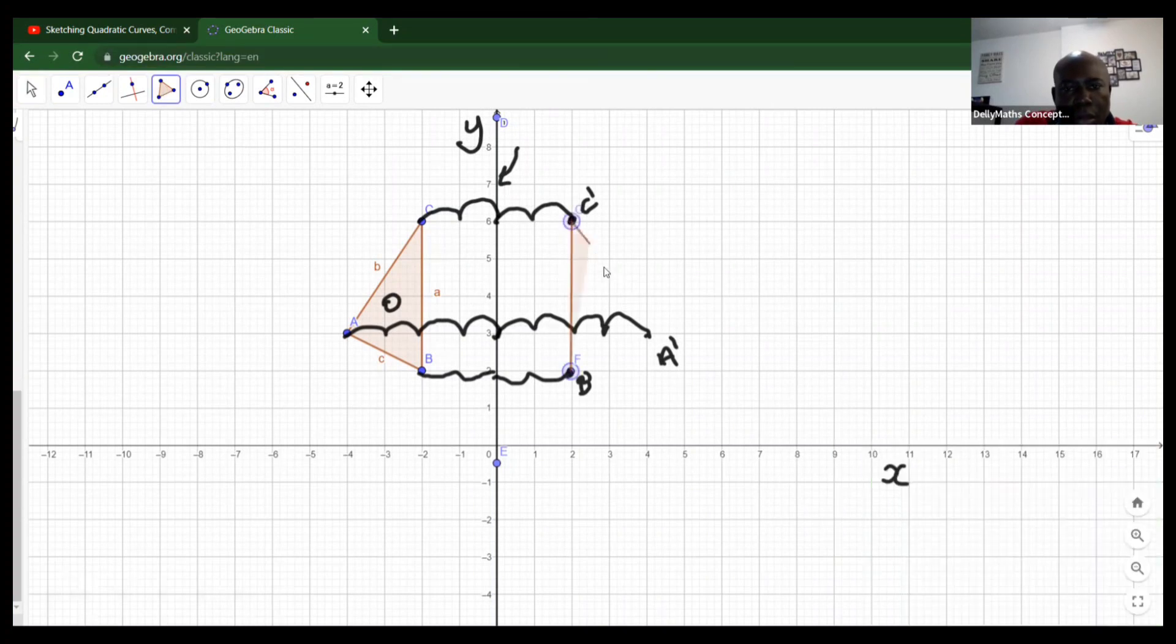Now if we should reconnect A prime, B prime, C prime, we're going to connect A, B, C. If we take a quick look, we're noticing that certain things happen.